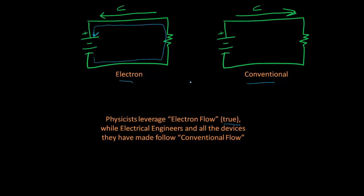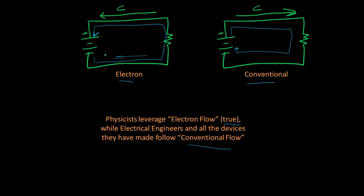However, electrical engineers, being practical, have denoted that current flows from the positive around to the negative, which is what most people better understand. All devices made — whether a diode, a battery, or other components — have been made to follow conventional flow, which is current from positive to negative. Sometimes you'll watch older videos made in a physics class where they show electrons flowing the opposite direction, which is actually true. The electrons flow one way, but the holes they leave behind flow the opposite direction, creating a current opposite to electron flow.